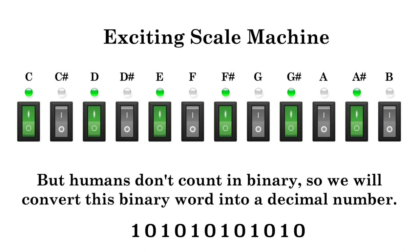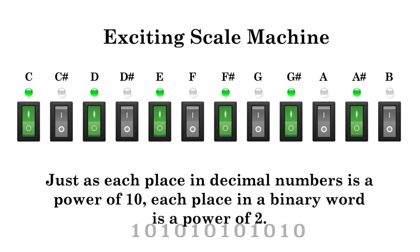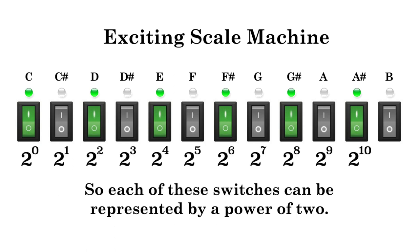But humans don't count in binary, so we will convert this binary word into a decimal number. Just as each place in decimal numbers is a power of 10, each place in a binary word is a power of 2. So each of these switches can be represented by a power of 2. 2 raised to the power of 0 is 1, 2 to the power of 1 is 2, 2 to power of 2 is 4. Then we get 8, 16, 32, 64, 128, and so on.